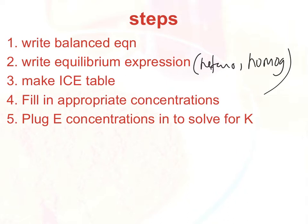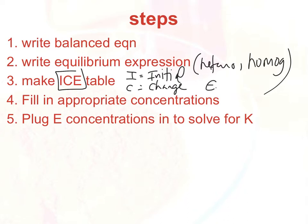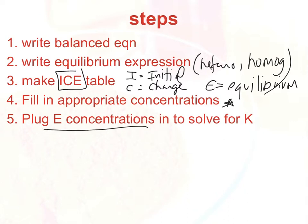You're then going to make something called an ICE table. The I in ICE stands for initial, C stands for change, and E stands for equilibrium. If you can remember that, you'll know what to plug into each space. After making the ICE table, we plug in appropriate concentrations depending on what we've been given, then plug in the equilibrium concentrations and solve for K.